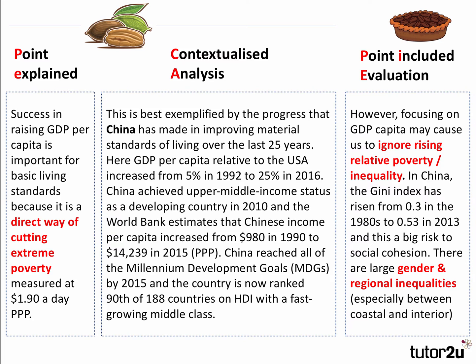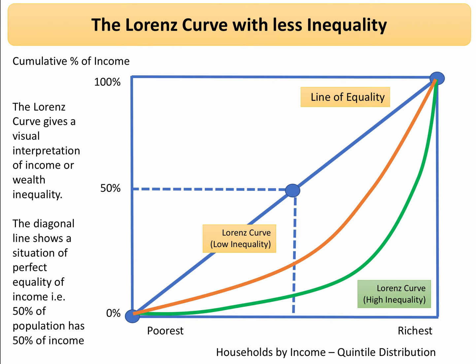However, the evaluation point: focusing solely on GDP per capita may cause us to ignore increasing relative poverty and inequality. In China, the Gini coefficient rose from 0.3 in the 1980s to 0.53 in 2013 — a big risk to social cohesion — with significant gender and regional inequalities, particularly between coastal and interior areas. This is a good moment to include a Lorenz curve diagram, perhaps showing an outward shift from lower inequality in one scenario to a much higher level in another. Practise these diagrams carefully so they are accurate, quick, and fully labelled.